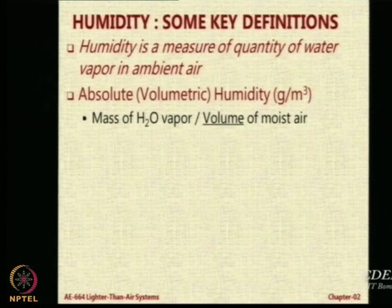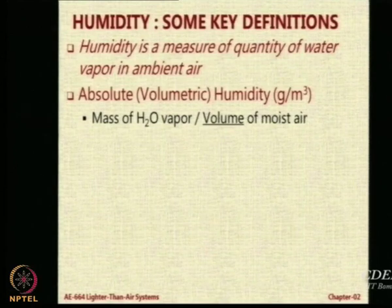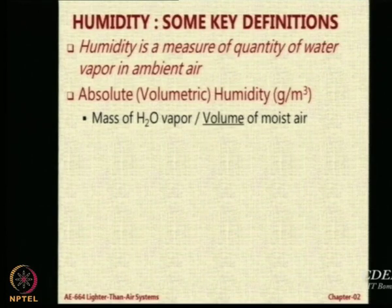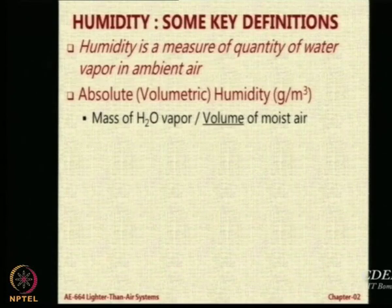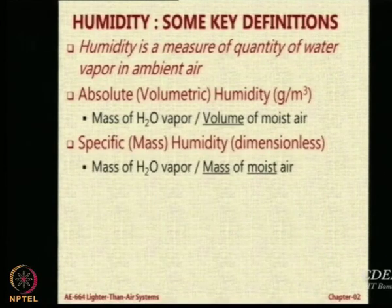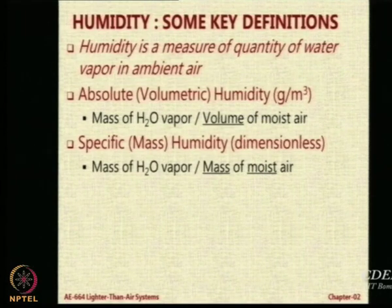Interestingly, there are several definitions of humidity, so we will revisit them very briefly. There is something called absolute humidity, also called volumetric humidity, where you look at the mass of water vapor per unit volume of moist air — moist air meaning air which has water vapor in it. You also have specific humidity or mass humidity, which is mass upon mass: mass of water vapor upon mass of the moist air.